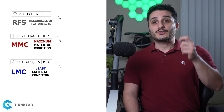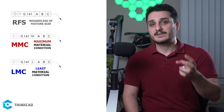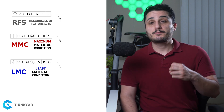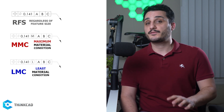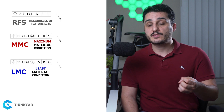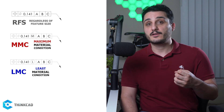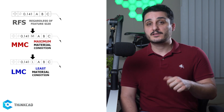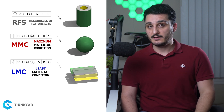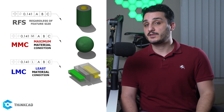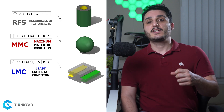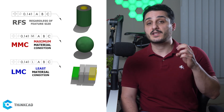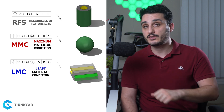We should now have a solid understanding of what RFS, MMC, and LMC conditions are. Let me just mention that MMC and LMC modifiers cannot be used with every single GD&T symbol out of the 14 — some allow you to use them and some don't. As a rule of thumb, remember that you can use these modifiers when you're pointing to a feature of size. Regular features don't allow the use of material modifiers. The same principles with MMC and LMC modifiers apply to spherical and planar features of size as well.